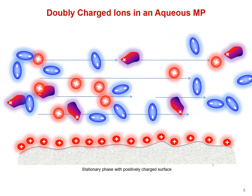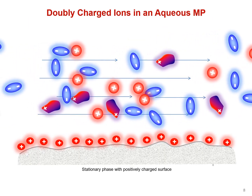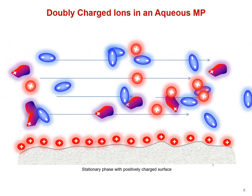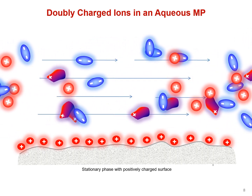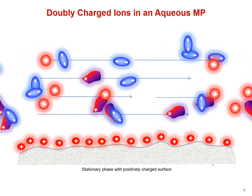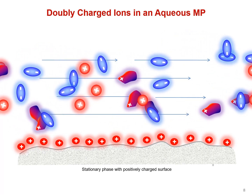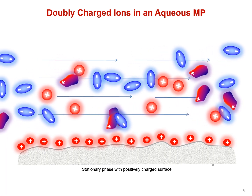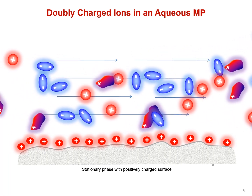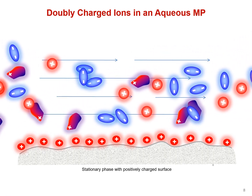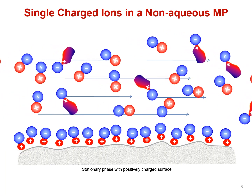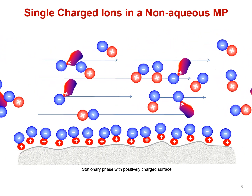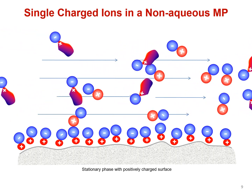Let's explore more about why we think these rules result in this new retention mechanism. In an aqueous mobile phase, all of the ions in solution develop a solvation layer of water dipoles around their surface — you can see that by the glow around each ion. This prevents the ions, even those with multiple charges, from interacting directly with each other and results in a net neutral type pair.